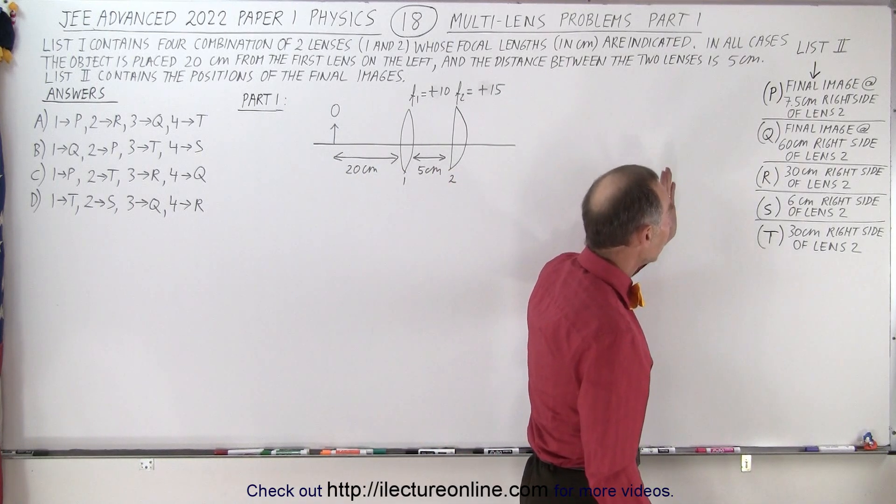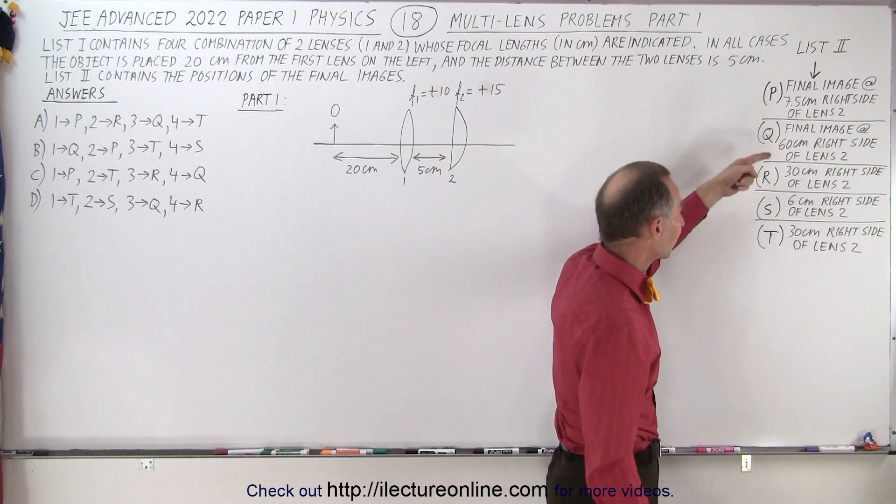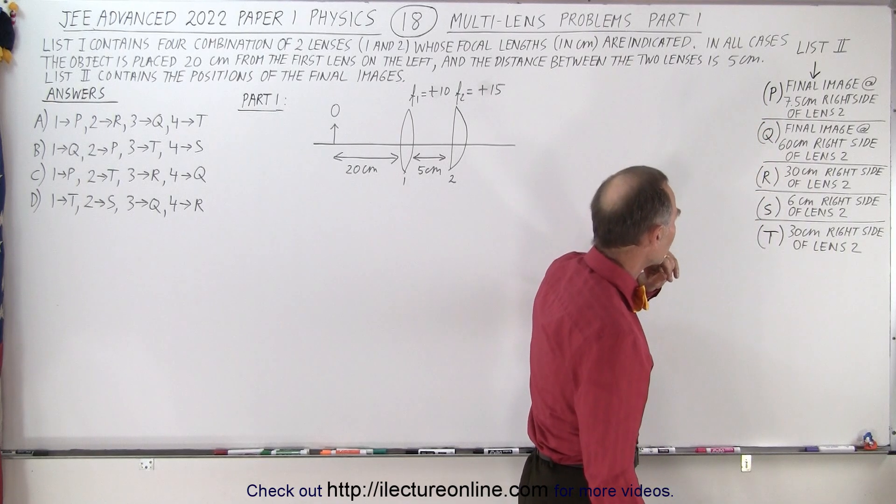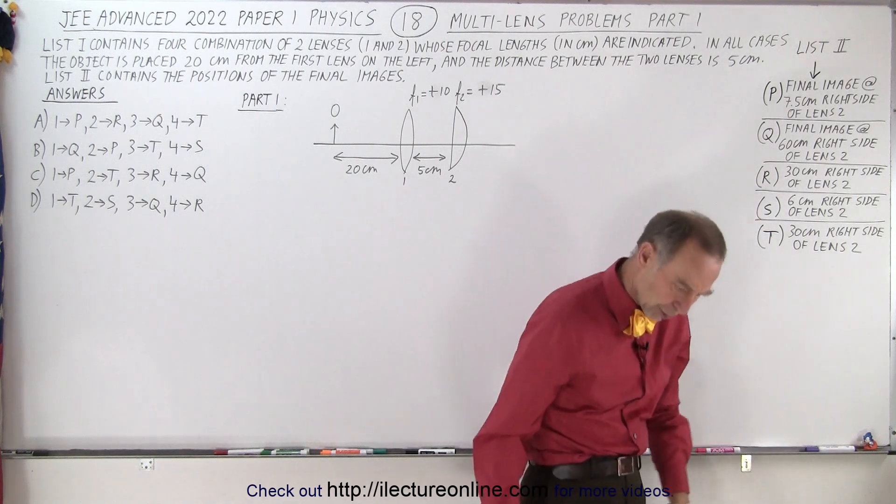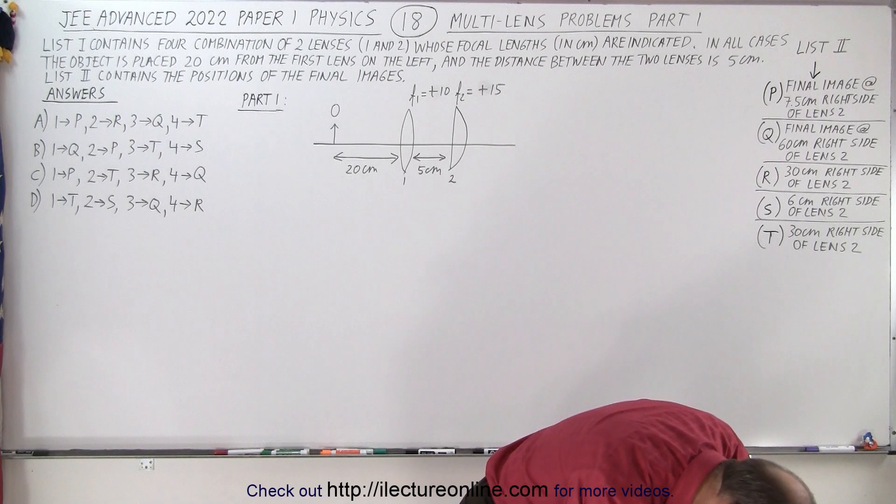List two contains the positions of the final images. So here we have five possibilities. In each case, it is to the right of lens two, and the indications are 7.5, 60, 36, and 30 centimeters. But something is wrong. This shouldn't be 30 centimeters twice.